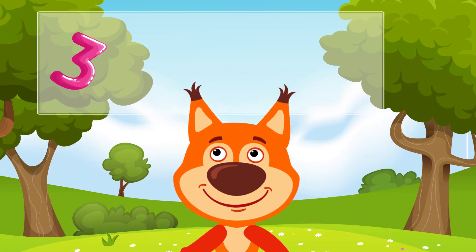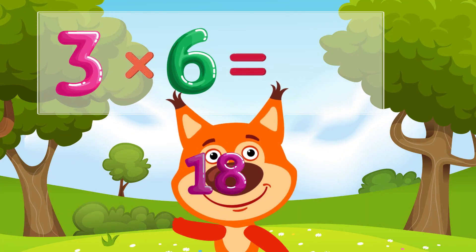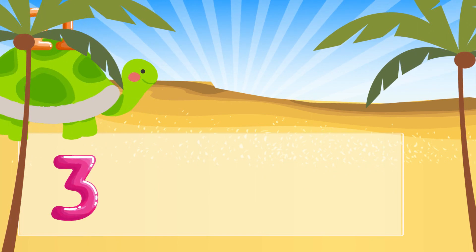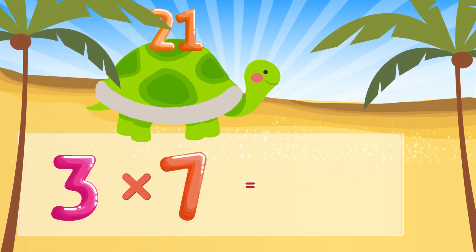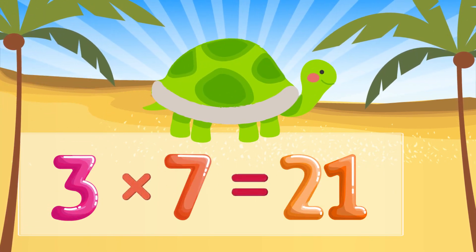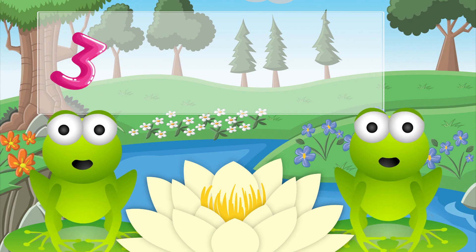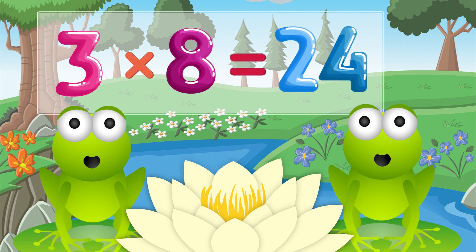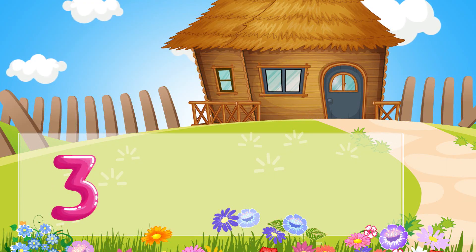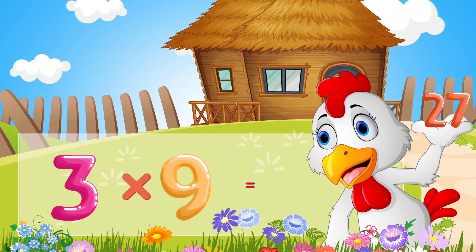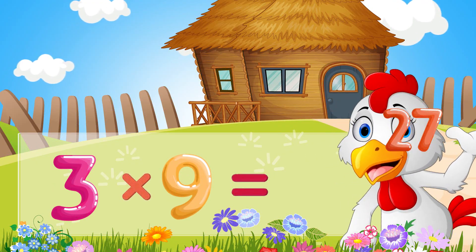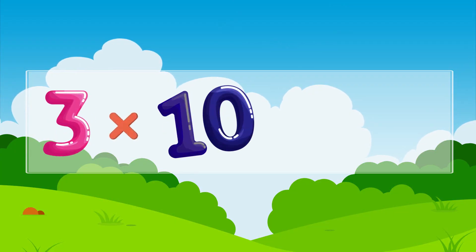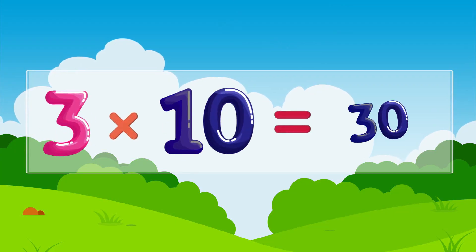Three times six is eighteen, three times seven is twenty-one, three times eight is twenty-four, three times nine is twenty-seven, three times ten is thirty.